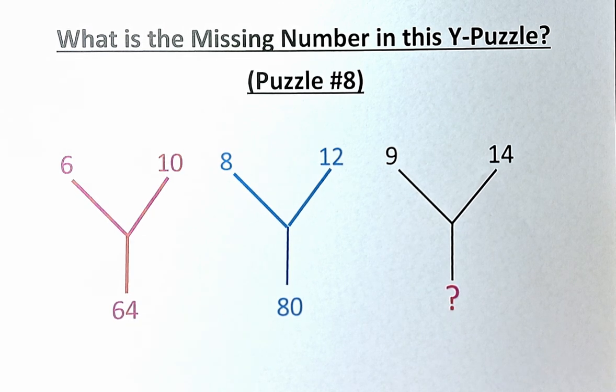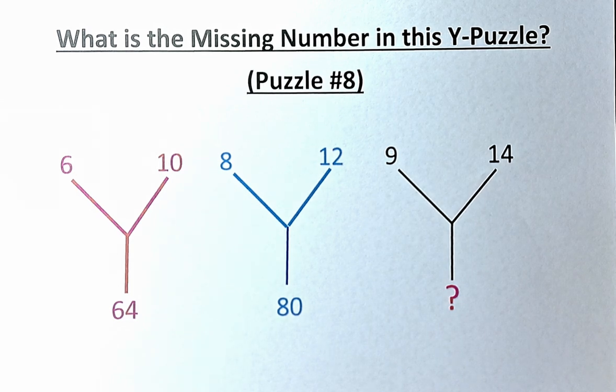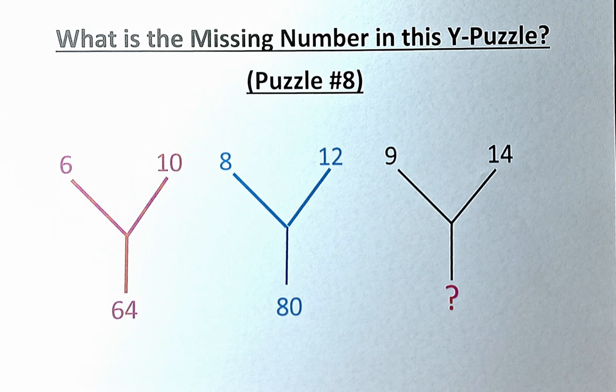Welcome back to the solution to puzzle number 8. What is the missing number in this puzzle? The numbers are 6, 10, 64, 8, 12, 80 and 9, 14 and a question mark.